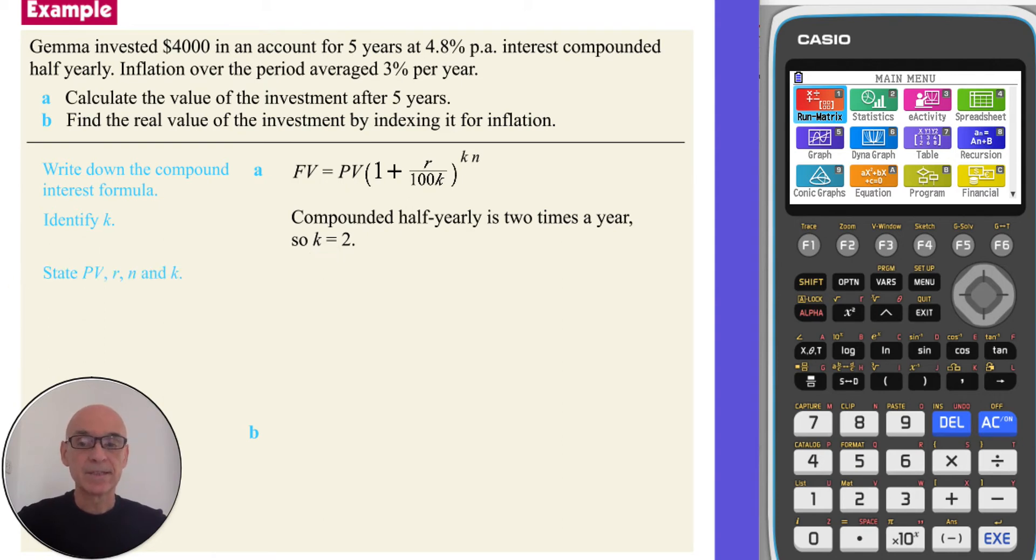We then state the present value, PV, which is 4000, the interest rate, R, that's 4.8, the number of years, N, that's 5, and K, which is 2.